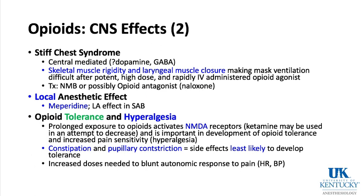Some opioids actually have a local anesthetic effect. Meperidine is the example — if put in the subarachnoid space rather than given intravenously, it can have a spinal anesthetic-like local anesthetic effect.